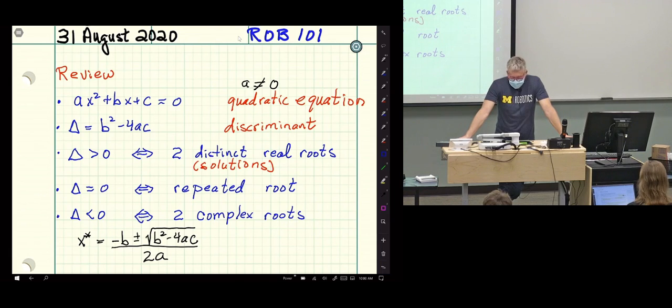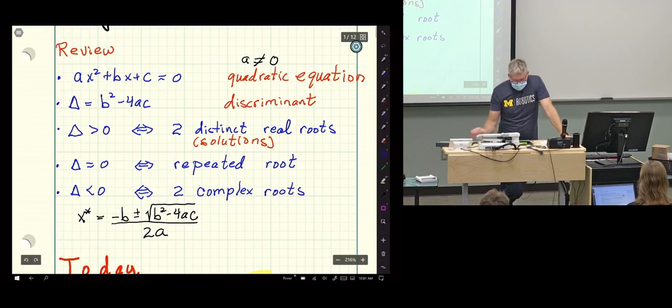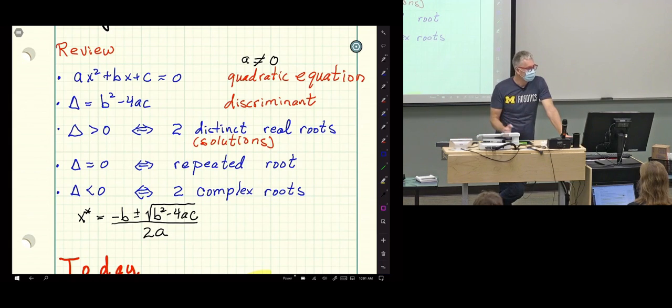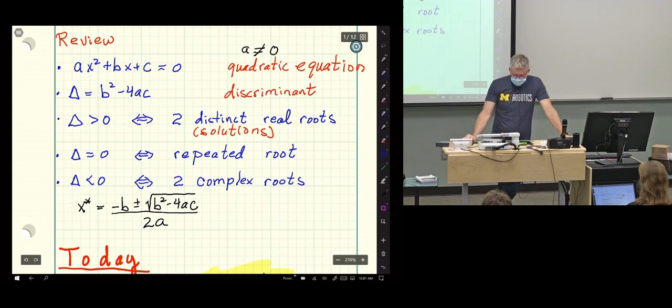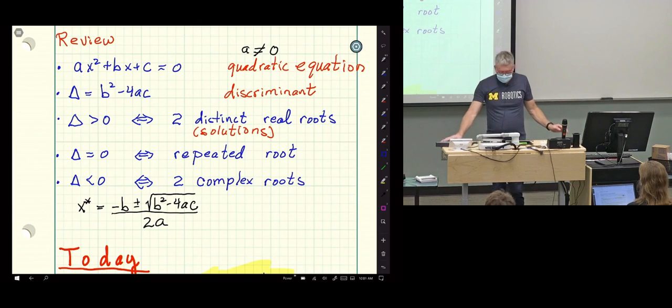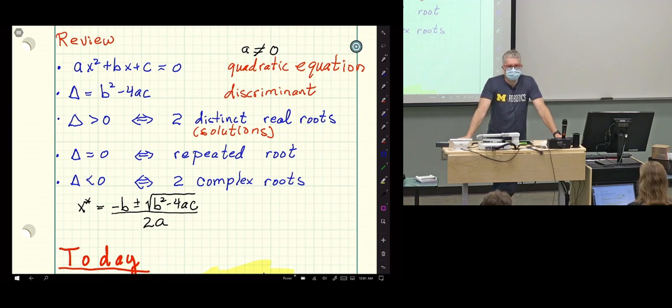So the way I typically start a lecture is I have a quick review here of the things that we covered from the previous lecture. So this is just to give a quick reminder of the highlights so that when we start again, there's some continuity in the intellectual progression. The only thing we're assuming in Rob 101 is that you're familiar with high school algebra, and so taking it to linear algebra is going to be kind of a natural progression.